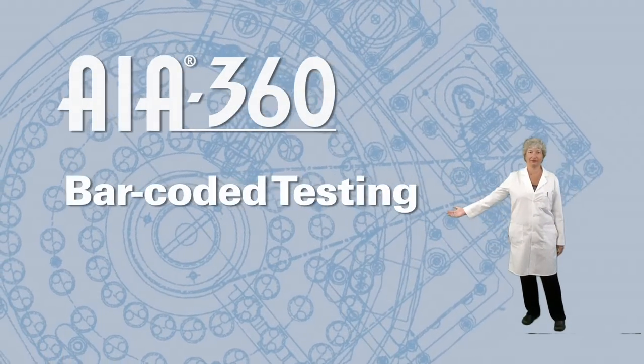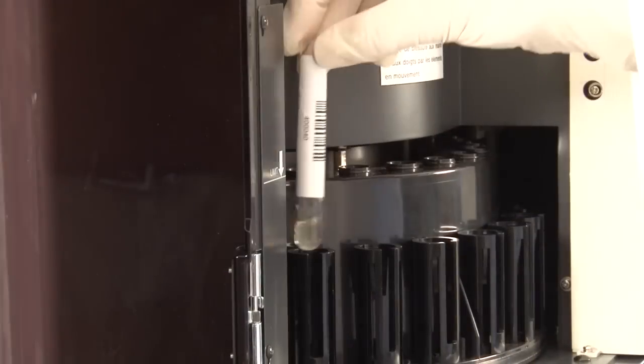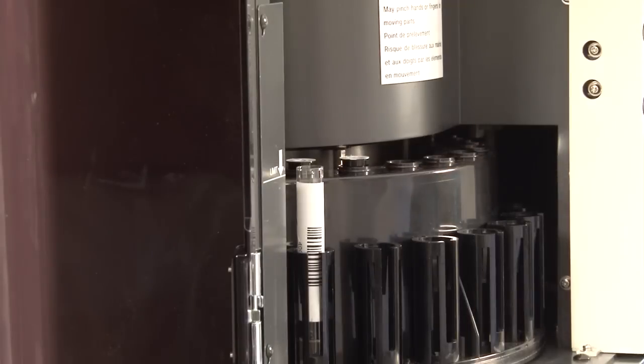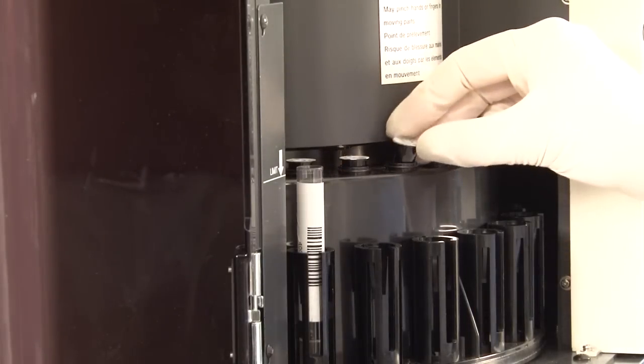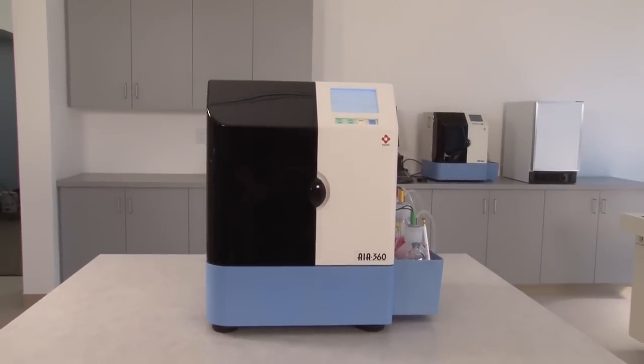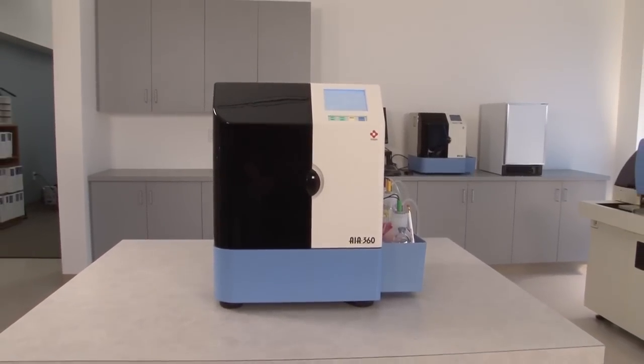Barcoded testing. Like other TOSO analyzers, the AIA360 uses a barcode system to identify patient samples and test cups to reduce user errors. The system is also equipped with clot detection to maintain result integrity and a fixed probe minimizes expendables.